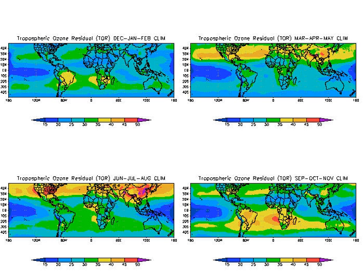Ozone in the troposphere is considered a greenhouse gas and may contribute to global warming. Photochemical and chemical reactions involving ozone drive many of the chemical processes that occur in the troposphere by day and by night. At abnormally high concentrations — the largest source being emissions from combustion of fossil fuels — it is a pollutant and a constituent of smog. Photolysis of ozone occurs at wavelengths below approximately 310 to 320 nanometers.